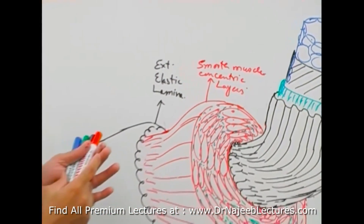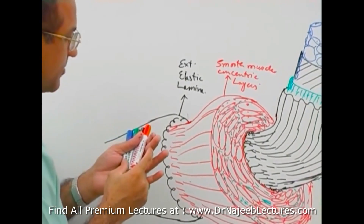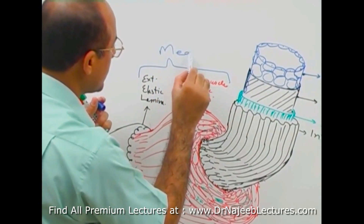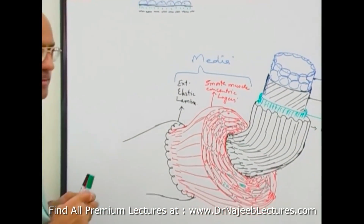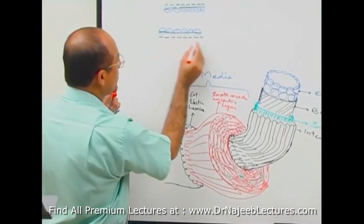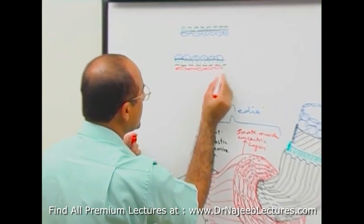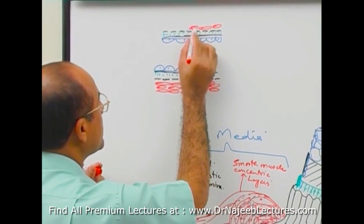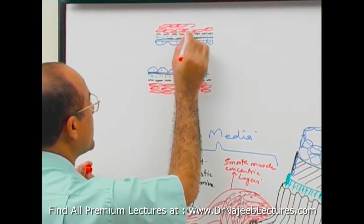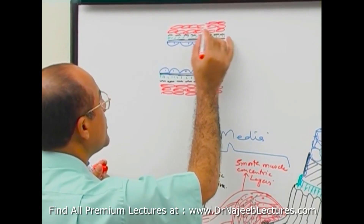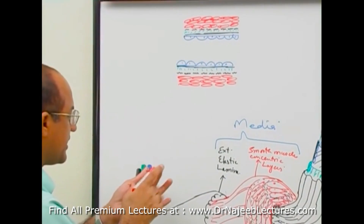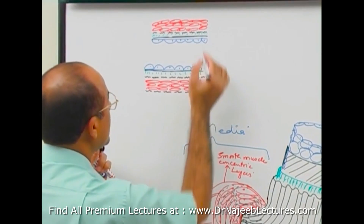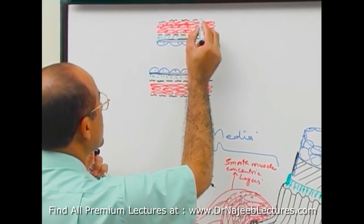In a medium-sized artery, the concentric layers of smooth muscle and the external elastic lamina together form the media. Outside the external elastic lamina comes the outermost layer.